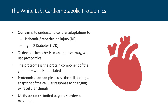Our group uses the Langendorff system combined with proteomics to understand cellular adaptations to two main conditions: myocardial ischemia-reperfusion injury in otherwise controlled hearts, and how myocytes adapt to type 2 diabetes. Proteomics allows us to develop a hypothesis in the most unbiased way — we allow our hearts to define follow-up candidates rather than going in with a pre-formed question. The proteome is the protein component of the genome — what is translated — and represents one of the closest points to physiological function. The metabolome has an even greater influence on function observed using Langendorff perfusion.